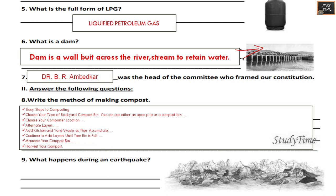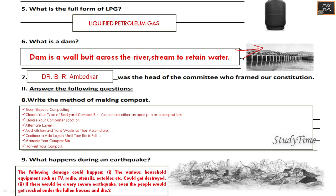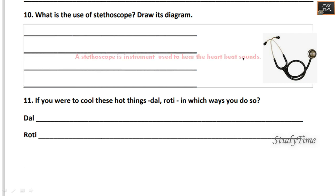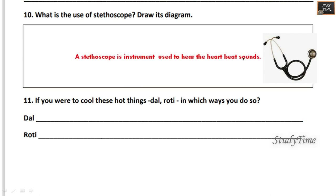What happens during an earthquake? Various household equipment such as TV and radio will get destroyed in a severe earthquake, and people would get crushed under fallen houses and die. What is the use of a stethoscope? It is an instrument used to hear heartbeat sounds. A diagram is provided here — you can refer to it.